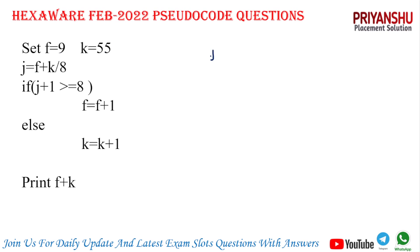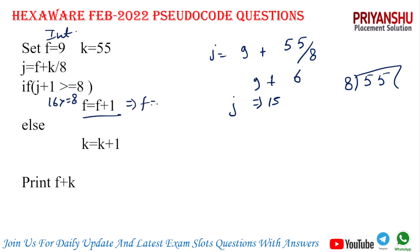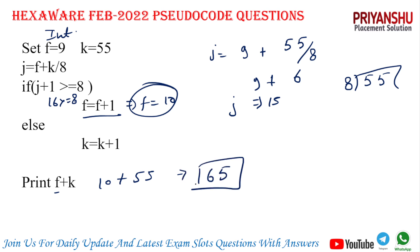Next question: f = 9, k = 55. First, j = f + k / 8 = 9 + (55 / 8). Since these are integer values, 55 / 8 = 6 (because 8 × 6 = 48, remainder 7). So j = 9 + 6 = 15. Then j + 1 = 16, and 16 >= 8, condition is true, so f = f + 1 = 10. Then f + k = 10 + 55 = 65. The answer is 65.